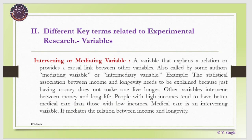Intervening or mediating variables are variables that explain a relation or provide a causal link between other variables, also called mediating or intermediary variables. For example, the statistical association between income and longevity needs explanation — just having money does not make one live longer. Other variables intervene: people with high incomes tend to have better medical care while those with low incomes do not. Thus medical care is an intervening variable that mediates the relation between income and longevity.